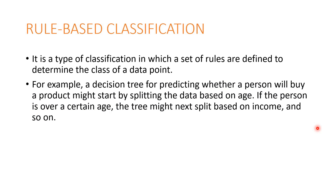Rule-based classification is a type of classification in which you have a set of well-defined rules to determine the class of a data point. For instance, a decision tree can be used for predicting whether a person will buy a product or not, based on income, age, demography, or gender. The rules are very clearly defined and they help you in classifying.